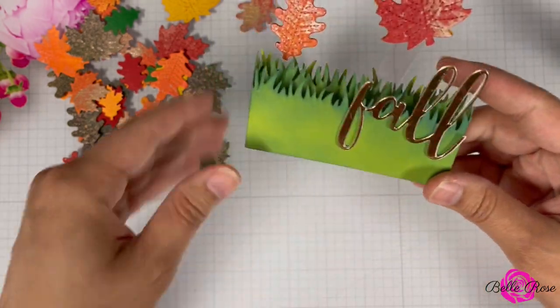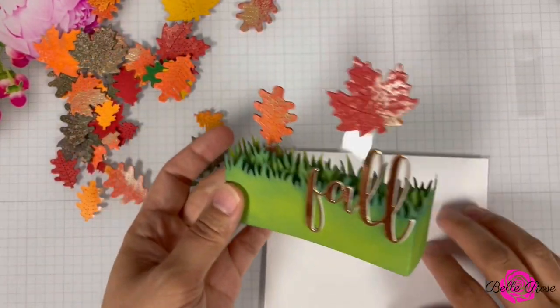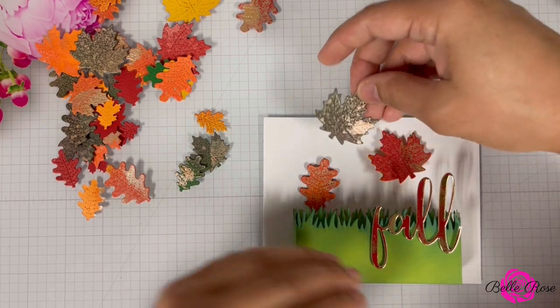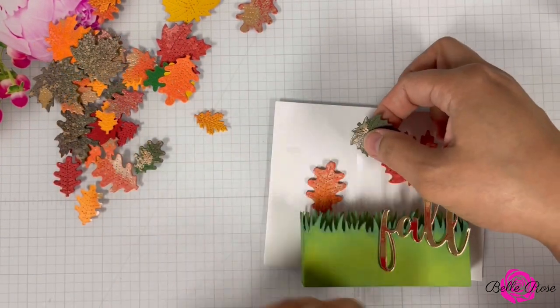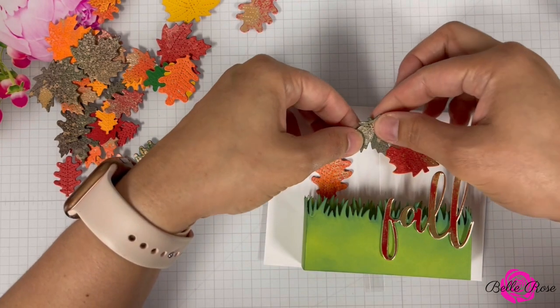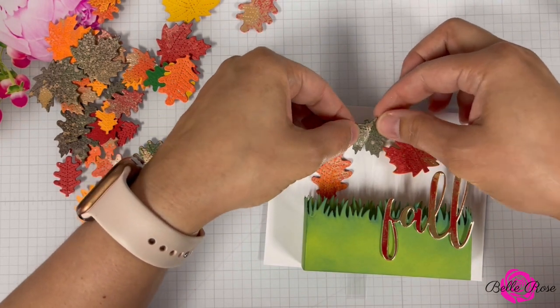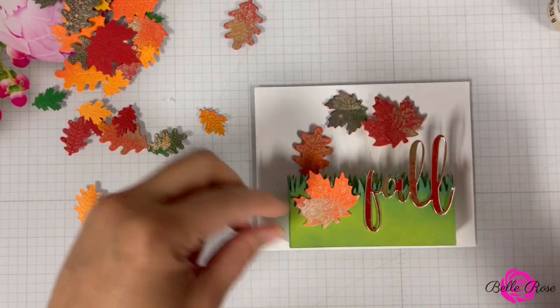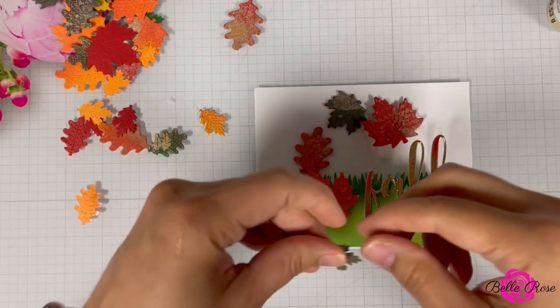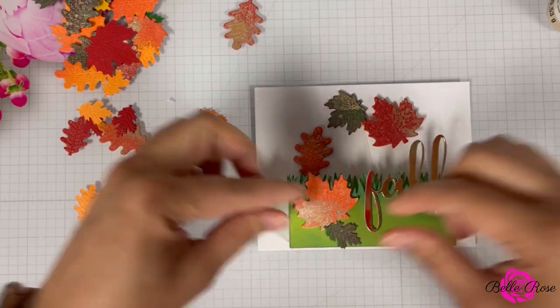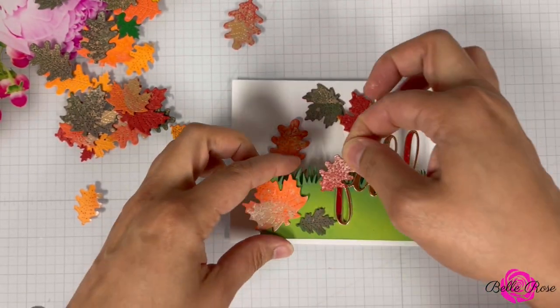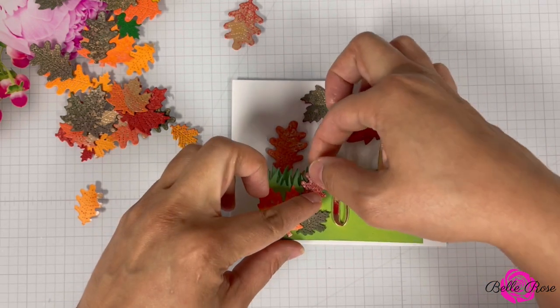Now here's a tip, trick, hack, whatever you want to call it. I decided to bring in an A2-sized envelope. I'm going to use this as my guide while I position and adhere the leaves to the card base. That way, once I'm done, I know it's going to be a perfect fit to this envelope. I'm now going to finish up adding the leaves to the card and once I'm happy with the placement, I'm going to adhere them to the card base.